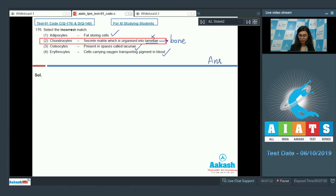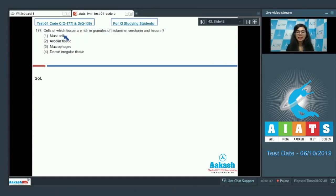Question 177: cells of which tissue are rich in granules of histamine, serotonin, and heparin? Mast cells, areolar tissue, macrophages, dense irregular tissue. Students, histamine, serotonin, and heparin are secreted by mast cells. These cells have granules which store these substances.